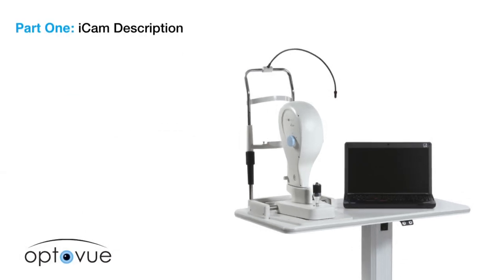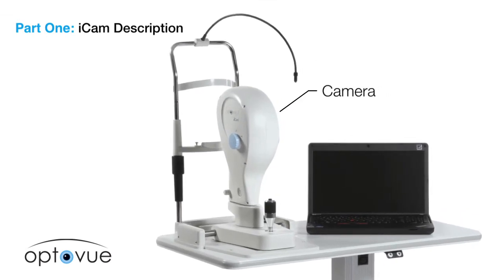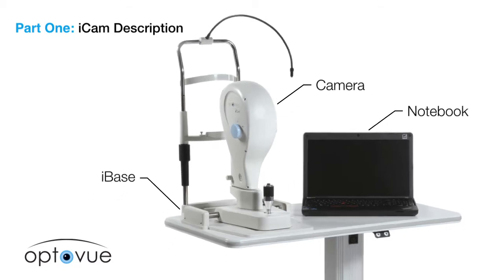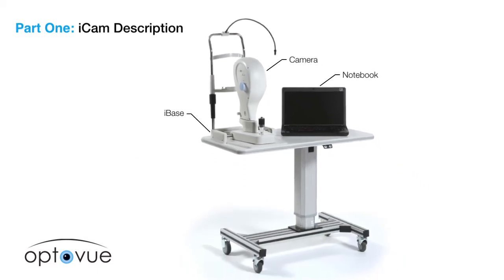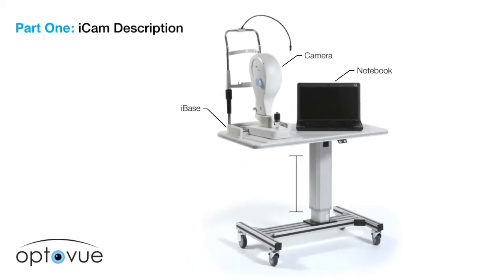Part 1: Features. The camera sits on the joystick mount and chin rest assembly referred to as the iBase. The iCam is connected to the computer, a power supply, and the iBase. It should be mounted on a table capable of raising and lowering.